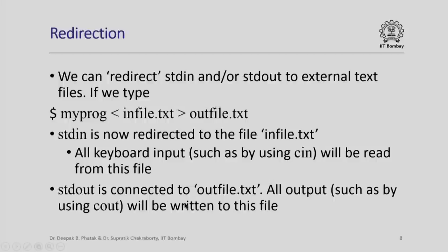It is possible to redirect the two standard files stdin and stdout to external text files stored, for example, on disk. If we type at the command line: myprog < infile.txt > outfile.txt, this means do not read data from stdin but read from infile.txt. In short, stdin is now redirected to the file infile.txt, so all keyboard inputs such as by using cin will now be read from this file. Similarly, > outfile.txt means that stdout is connected to outfile.txt.